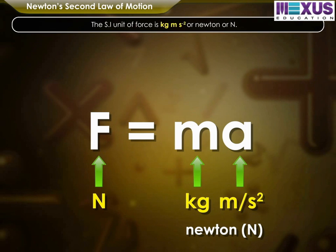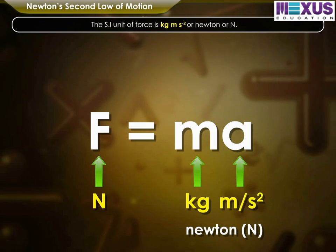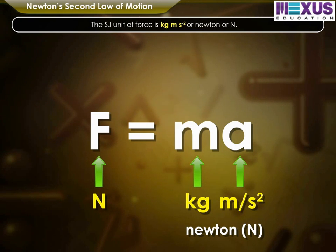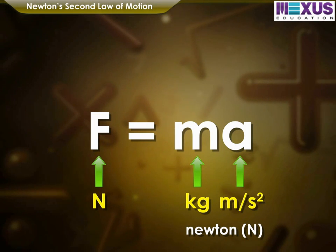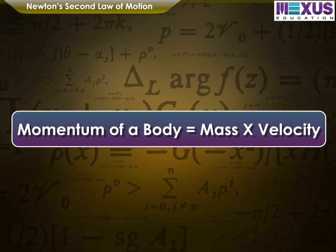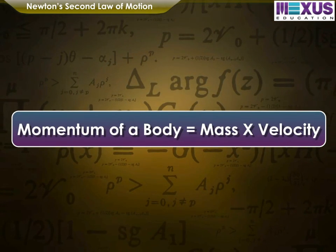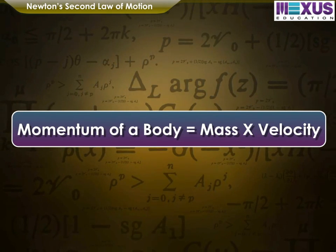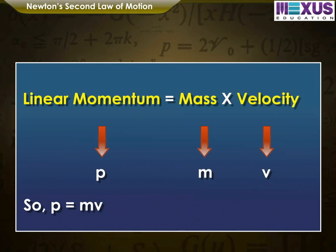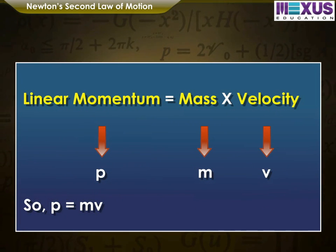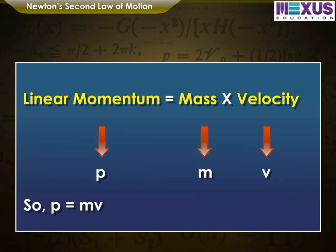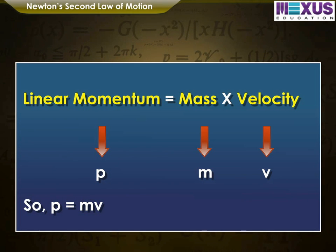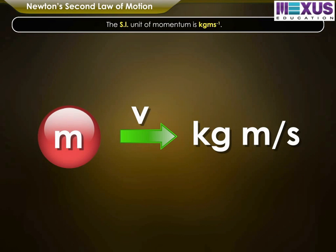The SI unit of force is kilogram meter per second squared, or Newton (N). The product of mass and velocity of a body is called the momentum of the body. Momentum is denoted by the letter P. For a body of mass M moving with linear velocity V, the linear momentum is given as P is equal to M times V.